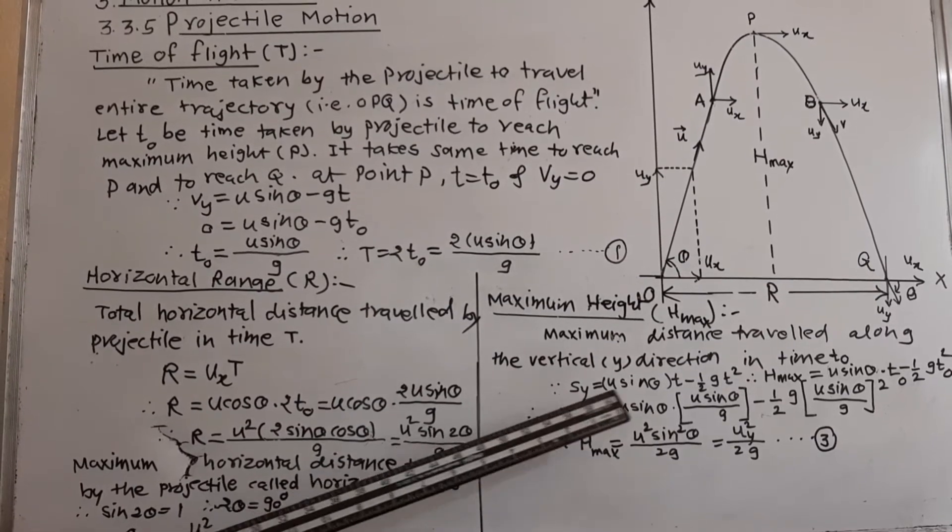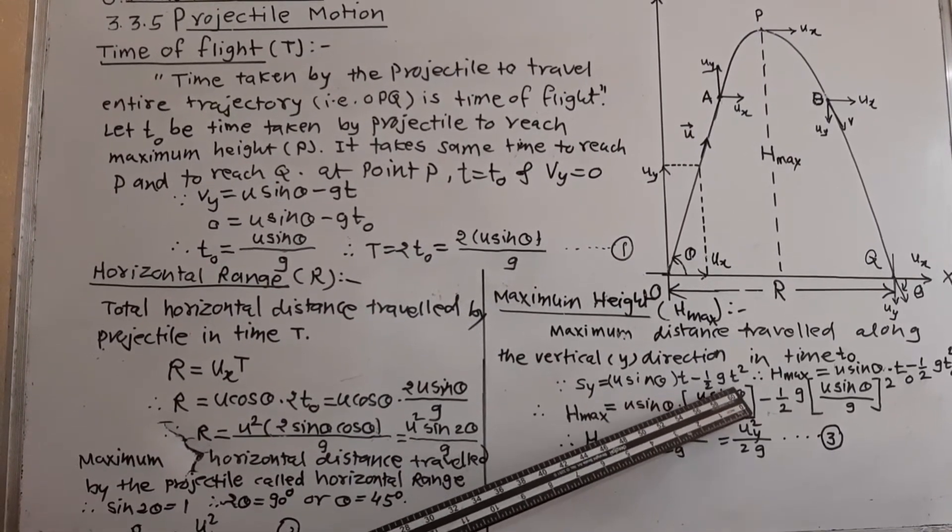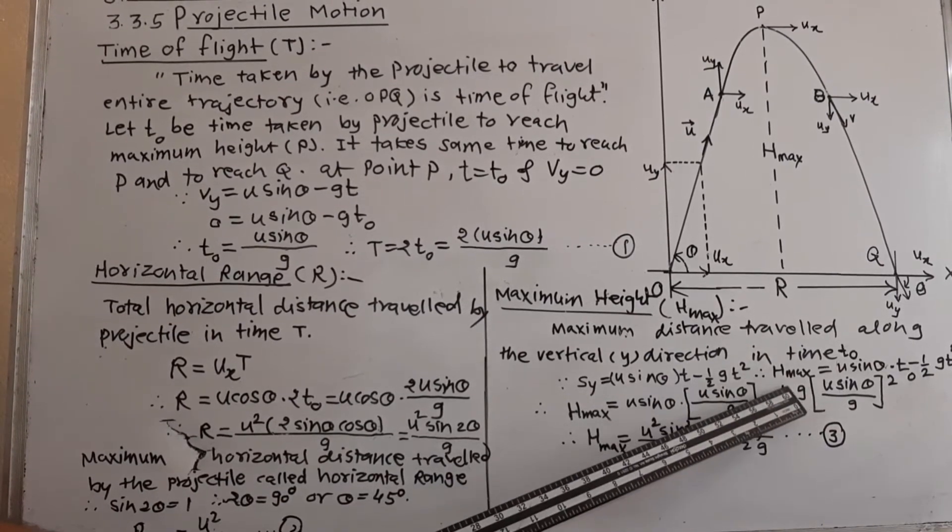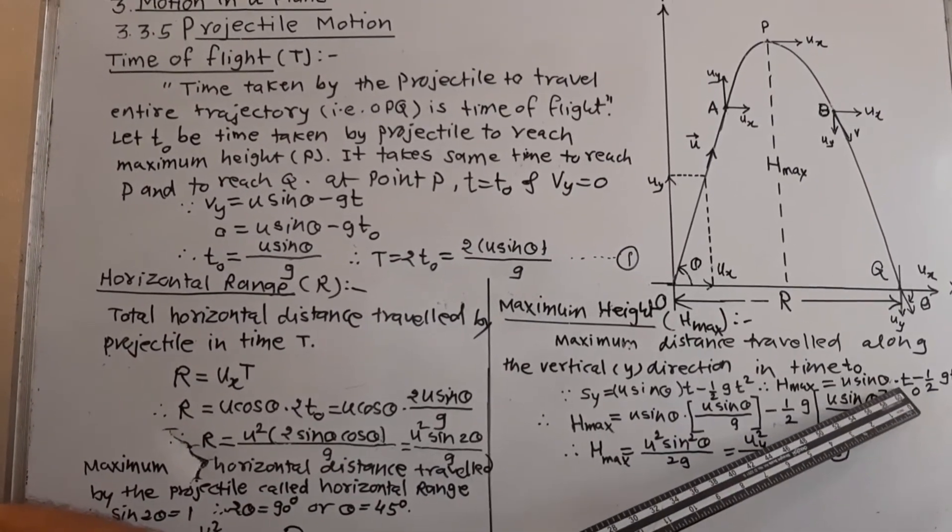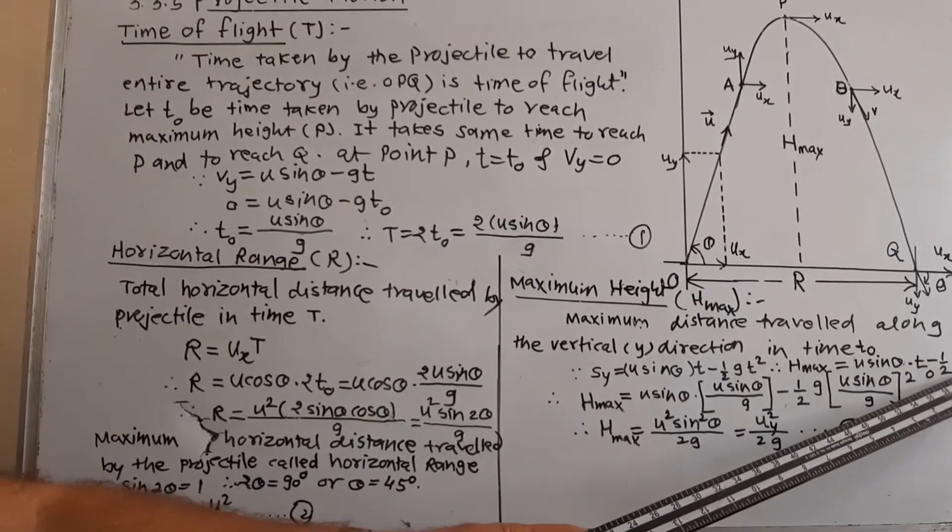According to this equation, Sy is equal to U sin theta into small t minus 1 half GT square. We can write H max is equal to U sin theta into T0 minus 1 half G T0 square.